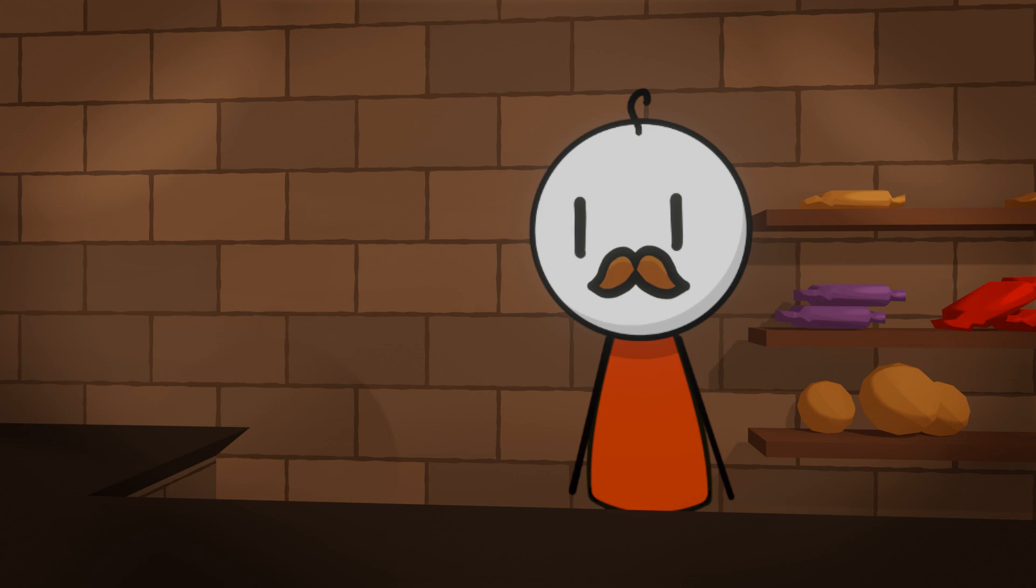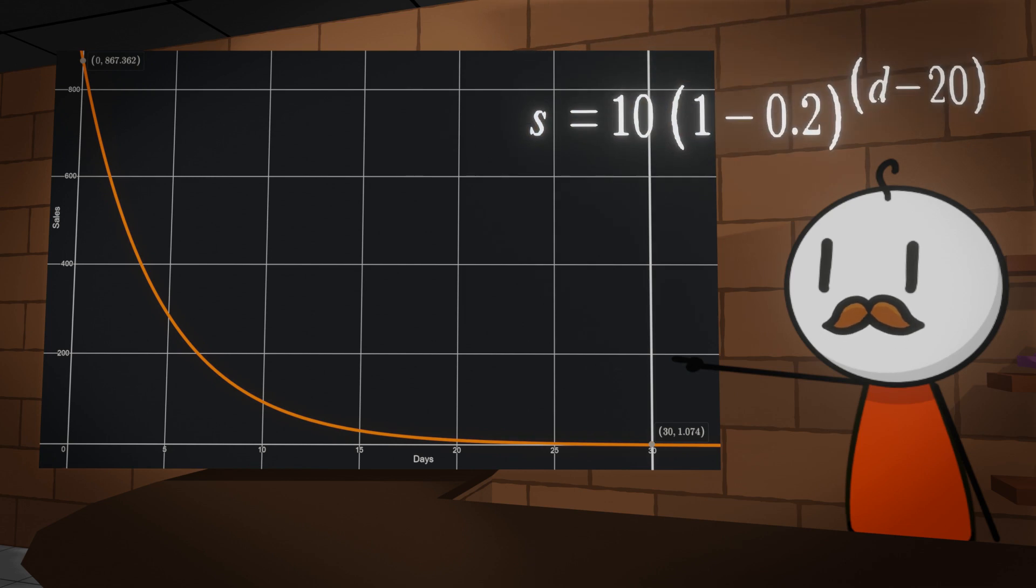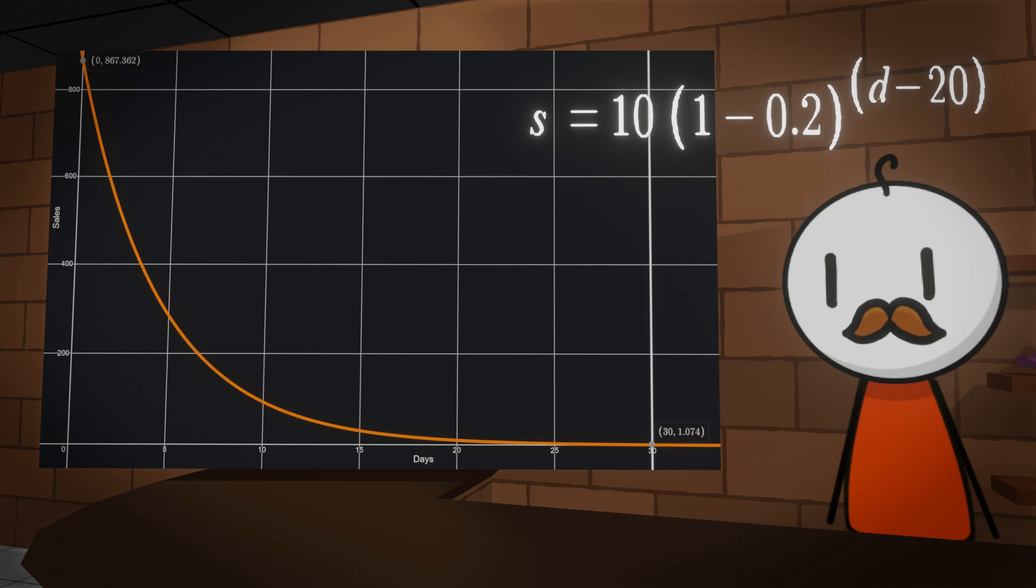Now, on the other hand, oranges have greatly decreased in sales. The equation is sales equals 10 times 1 minus 0.2 to the power of days past minus 20.